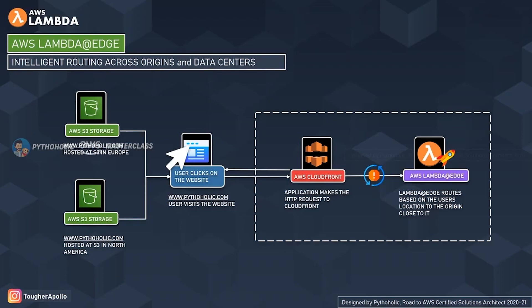When the user visits the website, the application makes an HTTP request to the CloudFront edge location, which triggers AWS Lambda at Edge. Lambda computes the location or route based on the user's location and redirects the viewer to the nearest origin. You might wonder: can't we do this with CloudFront alone? Yes, you can edit the CloudFront configuration to use a different origin, but the disadvantage is that CloudFront takes a long time to propagate changes across the globe, making it unsuitable for frequent origin switches.